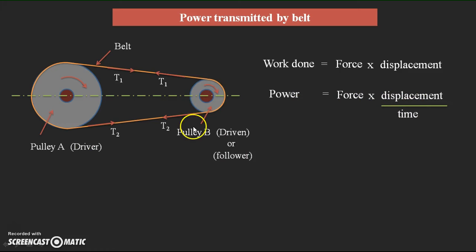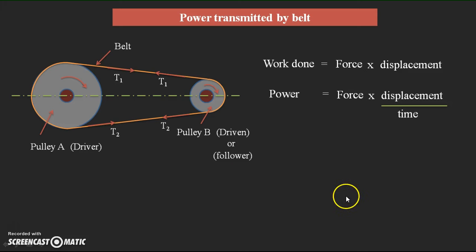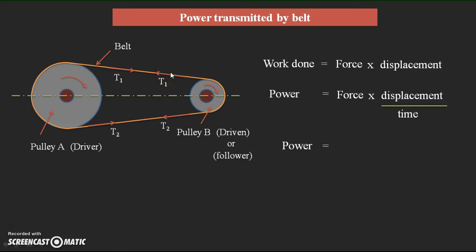Displacement per time gives us velocity — that is the linear velocity of the belt — which we can find with the help of N, the speed, by the formula π·d·N/60. So finally, we write the equation for power. We need to know the resultant force acting in the belt. The belt faces two forces in the form of tensions: tension in the slack side and tension in the tight side.